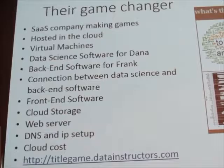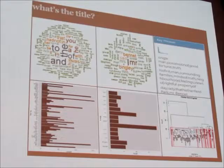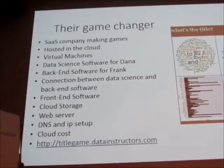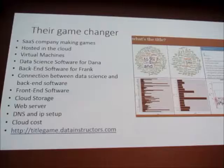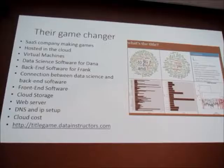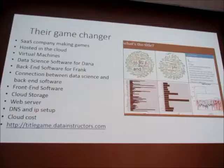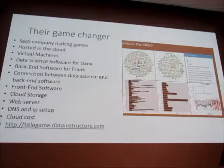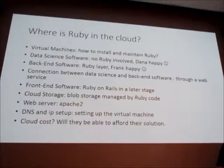What are they thinking about for decisions? They say: we're going to be like a SaaS company, and we want to host our solution in the cloud using virtual machines. Dana wants to use data science software, but Frank is really keen on Ruby. The data science solutions need to be connected to the Ruby solution, so they'll need to figure out how to work with web services. They need to get their novels up in the cloud, so they need cloud storage. They also need to figure out their DNS and IP setup, and make sure cloud costs are not getting too high.